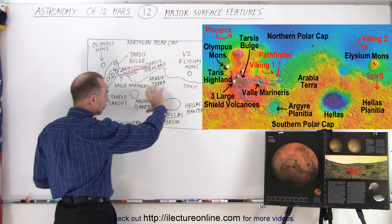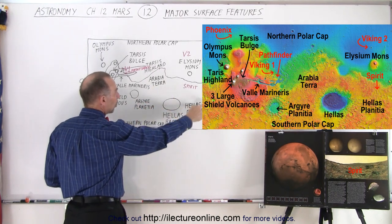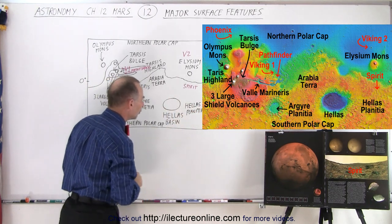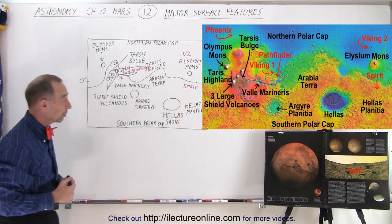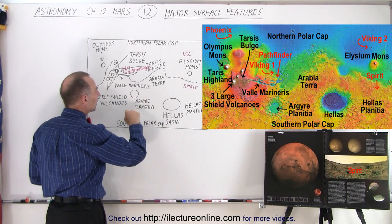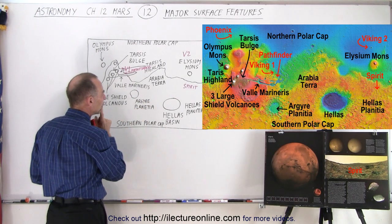Then around it, there is a region that's then called Hellas Planitia. Planitia means plain, so they named it after that impact zone, or at least what we believe to be an impact zone. Then to the left of that, we have Argyre Planitia.